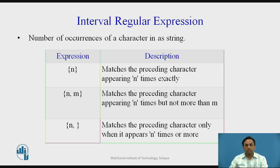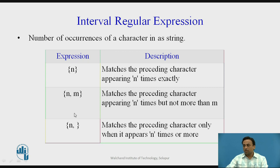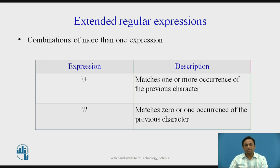Interval regular expressions tell us about the number of occurrences of characters in a string. The expression with curly brackets {n} matches the preceding character appearing exactly n times. The expression {n,m} matches the preceding character appearing at least n times but not more than m times.